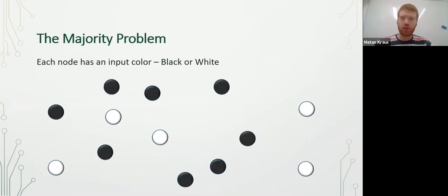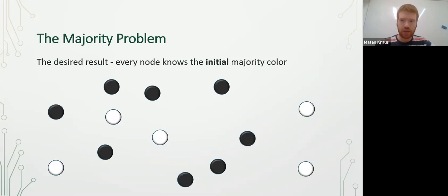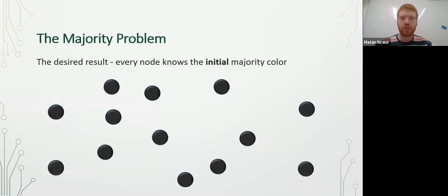In the majority problem, each node has an initial color, black or white. We want all the nodes to report the initial majority color. So for example, here there were eight nodes that are black and five white nodes, so the majority color is black. Therefore, we want all the nodes to report that the majority initial color was black.